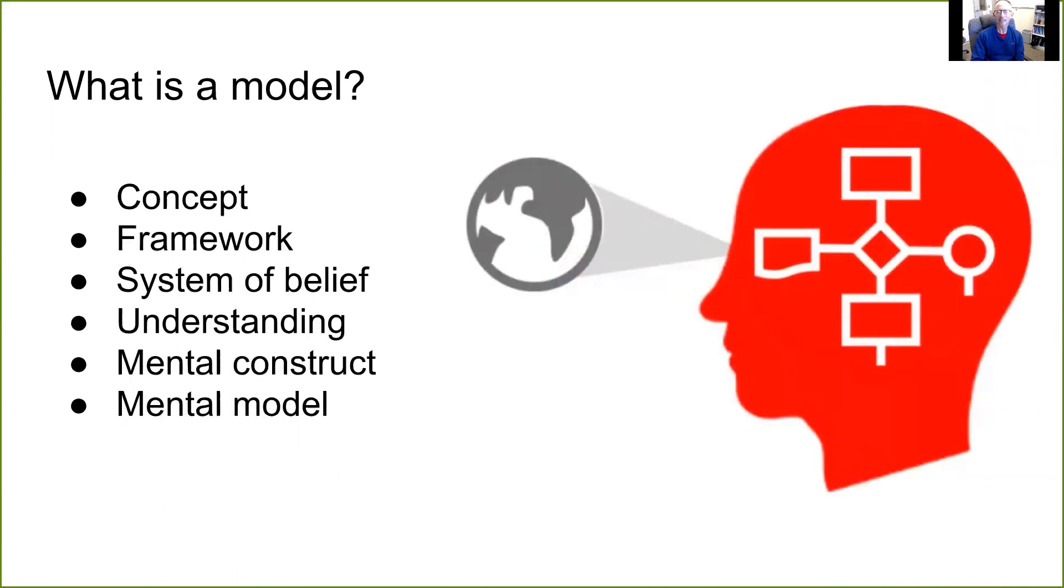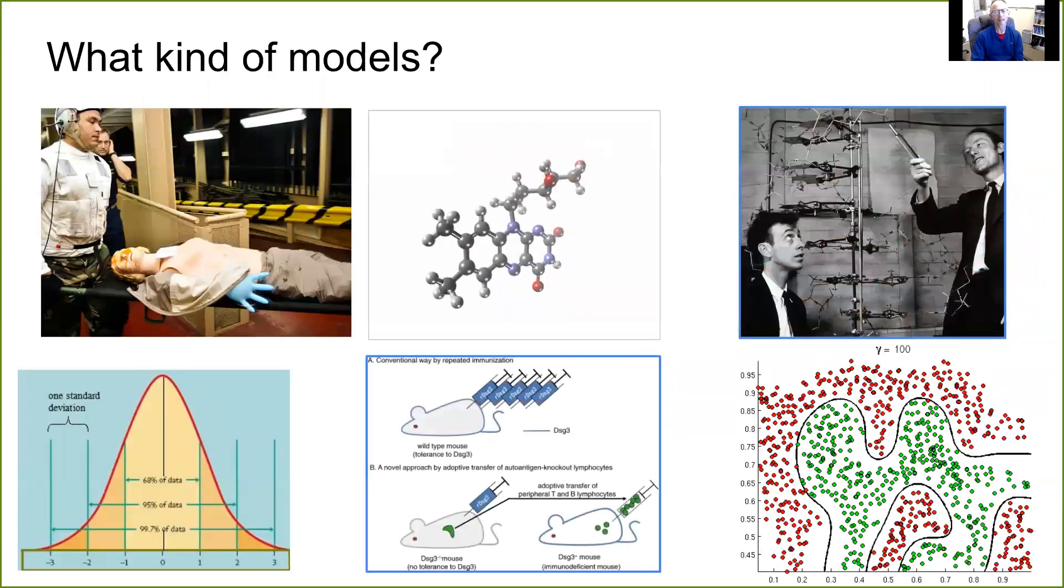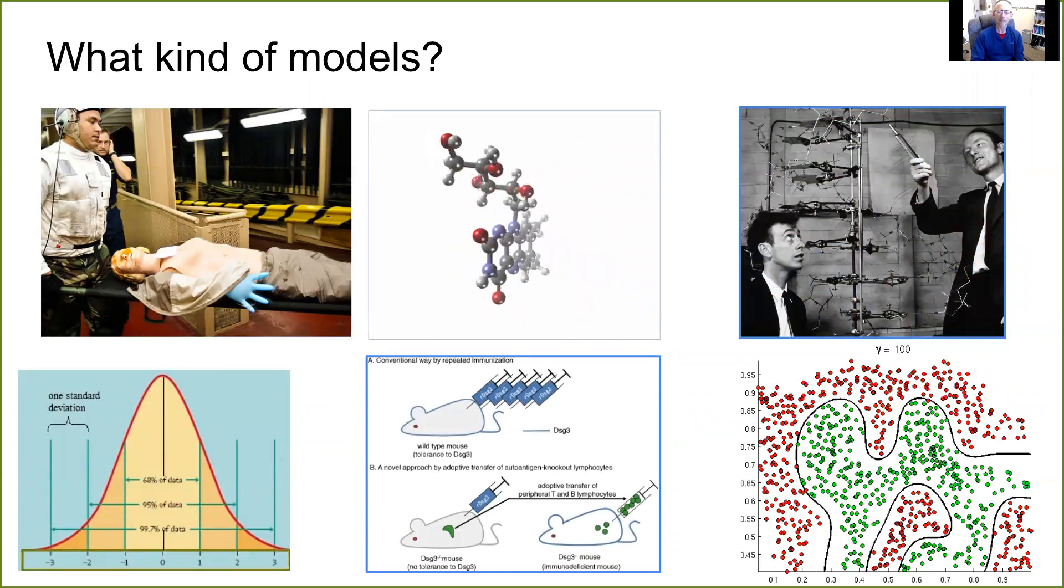So what is a model? Getting a little bit closer to our field of data science and more conceptual. A model is a concept, an idea, perhaps a conceptual framework as this figure seems to suggest. Could be a system of belief, an understanding of something that is real, a mental construct or mental model. So let's go through some examples that are perhaps more relevant to data science suggested by these figures, these illustrations.